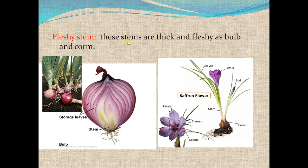Fleshy stem — these stems are thick and fleshy. Examples are bulb, corm, and onion. The bulb is actually the underground part of the onion. The upper green parts are leaves, and the food is stored in the non-green leaf bases. This whole area is called the bulb. Another example given in the book is the saffron flower — this is the corm of the saffron flower, and it is also a fleshy stem.